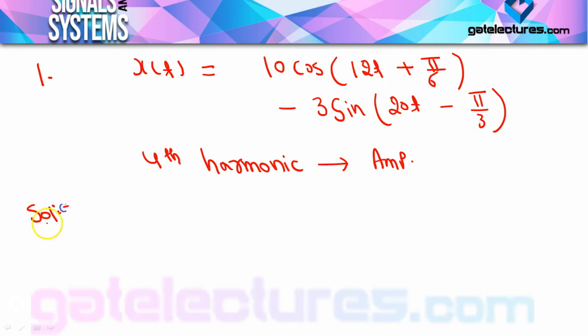First you need to understand that a Fourier series representation is given. As we studied, Fourier series is a non-sinusoidal to sinusoidal conversion, and in both cases the signal is periodic. So this Fourier series representation should be periodic. If it becomes periodic, then it is a correct representation. After that, look at what the amplitude of the fourth harmonic is.